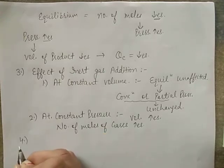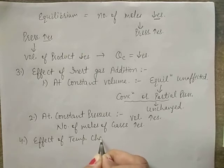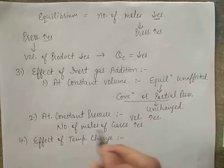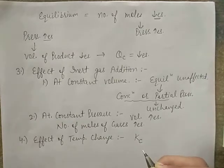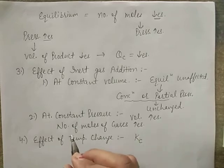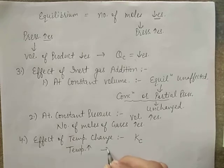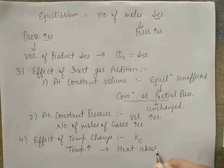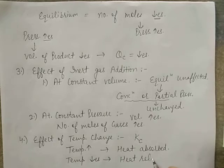The fourth factor is effect of temperature change. Temperature directly affects the value of equilibrium constant Kc. As temperature increases, equilibrium shifts in the direction where heat is absorbed. If temperature decreases, equilibrium moves in the direction where heat is released.